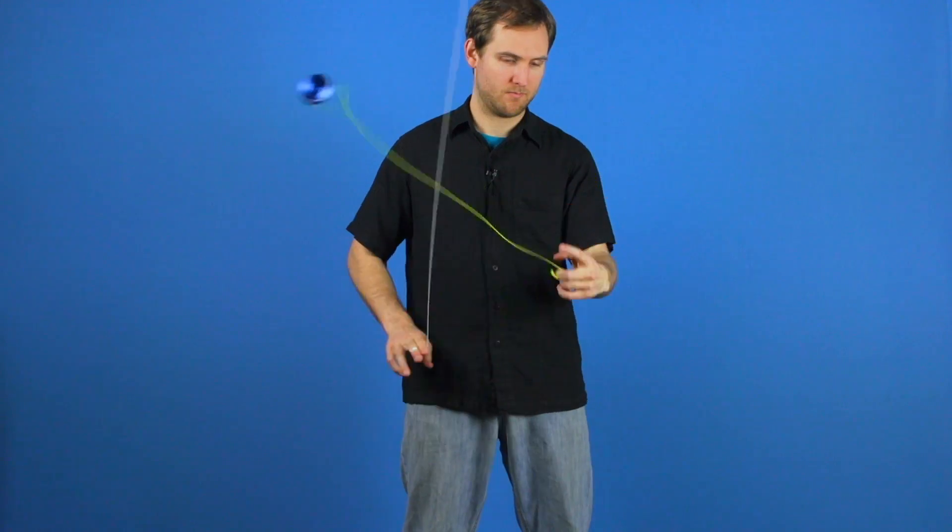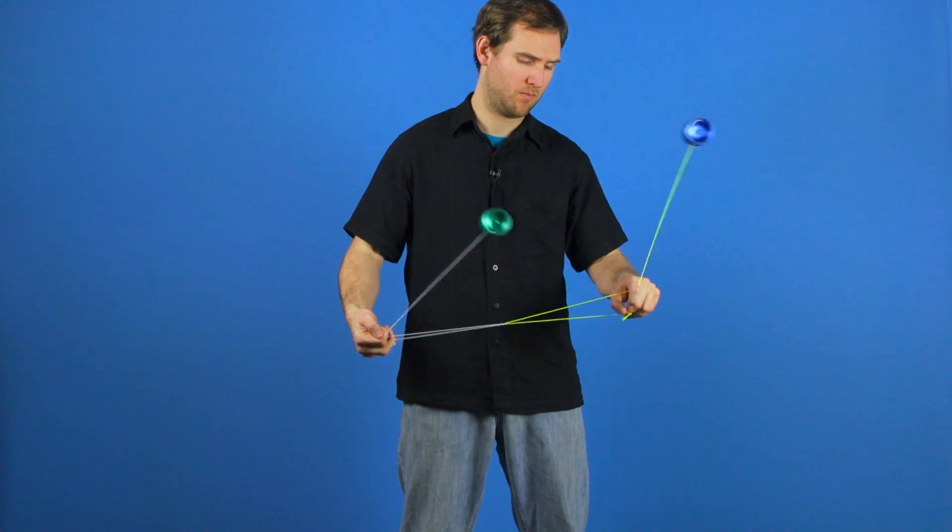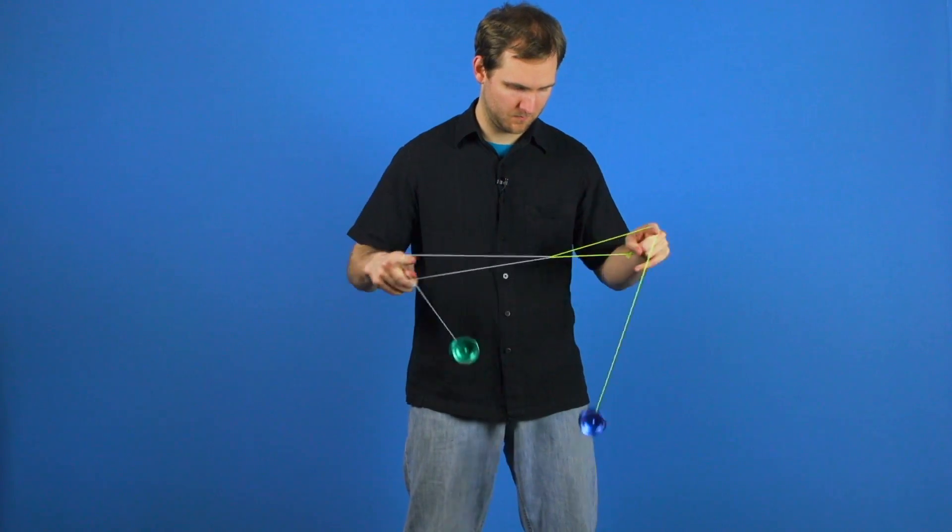Another great thing is if you know the trick Incendio, when you end you're actually set up right in place to do Incendio. You can do that trick, get into a one and a half kink mount, and combine Devil's Snare with other tricks you know to make a nice combo. But once you've got it down, that's how you do Devil's Snare.